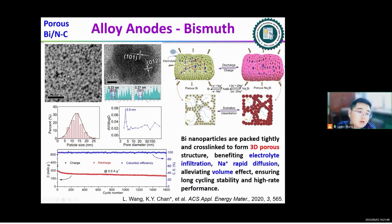Through the high-resolution TEM images, the uniform bismuth nanoparticles are packed tightly and cross-linked to form a three-dimensional porous structure. This bismuth particle ranges from 10 to 20 nanometers, which ensures the fast sodium reaction with bismuth, ensures a long cycling stability and a high rate performance.